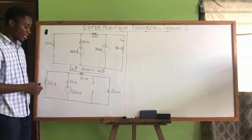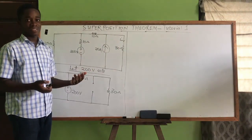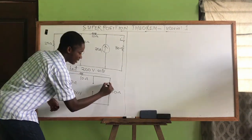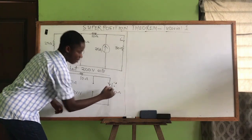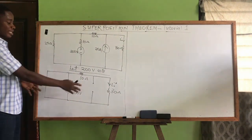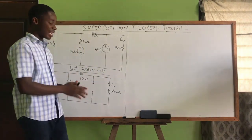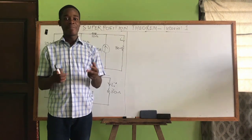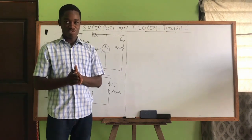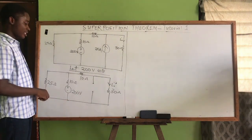We name the current through the 30 ohms in this configuration i₀' (i-naught prime), since the total current in the question is i₀. Direction is very important. Since only the 200V source is active, we can apply our network reduction method — or the mesh current or node voltage method — to calculate i₀'.